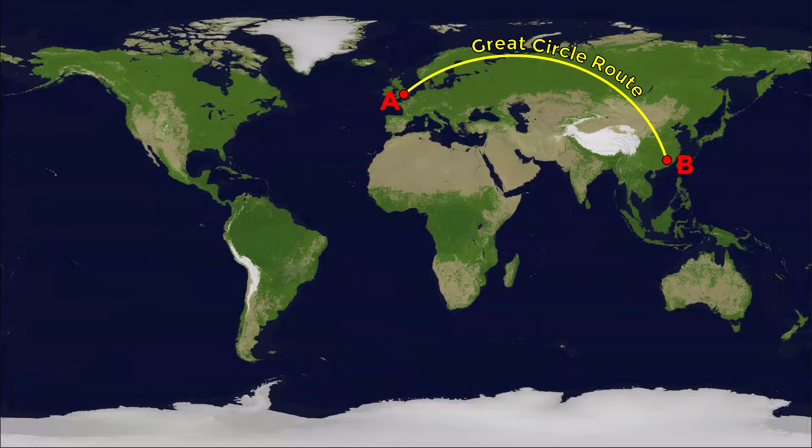However, when this route is represented on a regular map, we will observe a curved line. For example, the great circle or orthodromic route between point A and point B seems to be curved towards the north pole. From this perspective it is difficult to imagine that this is the shortest route, since we are used to the fact that the most direct route is a straight line. But if we look at a three-dimensional representation of the Earth, we would see that it is indeed the shortest route.